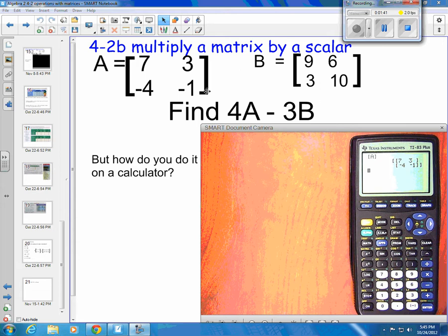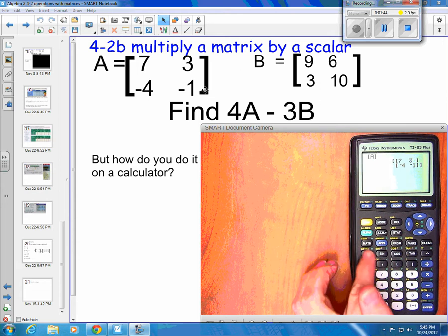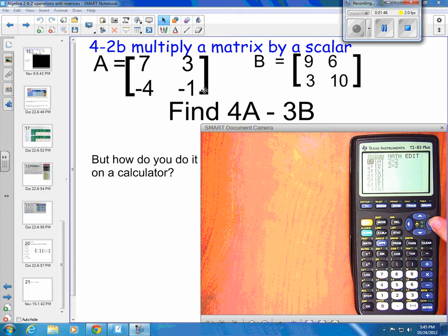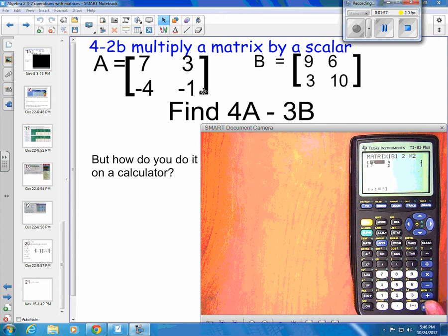So, the next thing I want to do is get my matrix B in there, so I'm going to go to 2nd matrix, and I'm going to go over to edit again, and I'm going to come down to matrix B and enter. And this one's not the right matrix, I haven't put this one in yet, it is a 2 by 2, so I'm going to enter on the 2, enter on the 2, but my first element is not negative 1, it's 9.